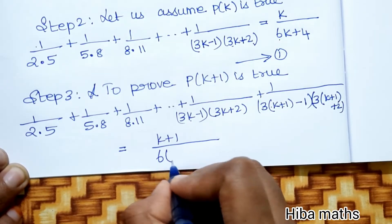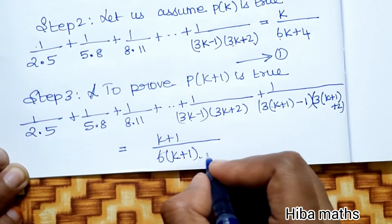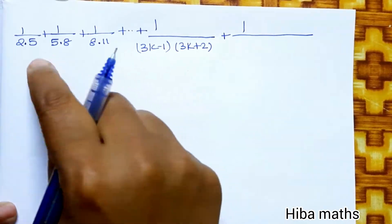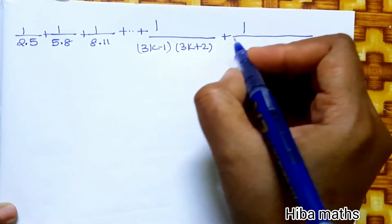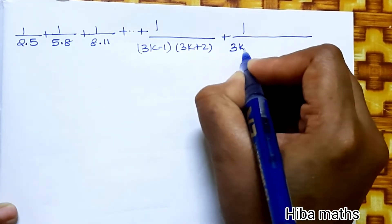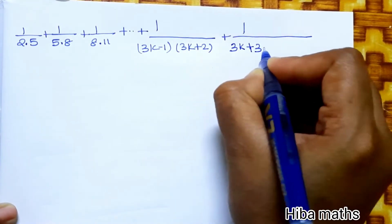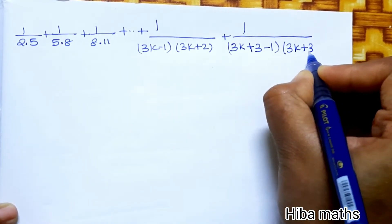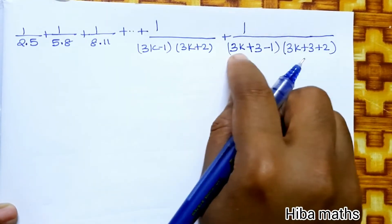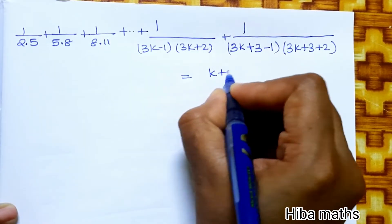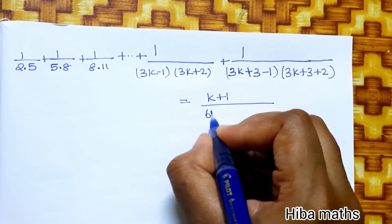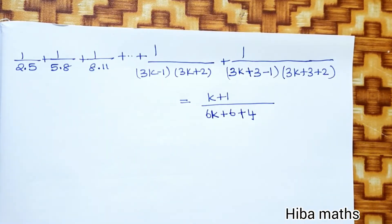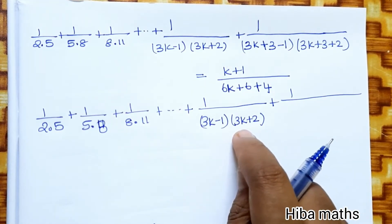This should equal (K+1)/(6(K+1)+4) = (K+1)/(6K+10). Now we solve: since 3K−1 gives 3K+2 when K is replaced by K+1, this term becomes 1/((3K+2)(3K+5)). So the expression equals K/(6K+4) + 1/((3K+2)(3K+5)).